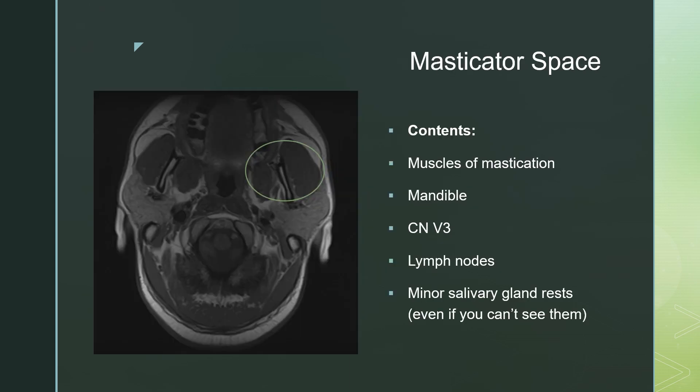In the masticator space, you have the muscles of mastication as well as the mandible to which they attach. You have branches of cranial nerve V3. You have lymph nodes and you have minor salivary gland rests. So if you have a mass in the masticator space, think about a mass involving the muscles like a rhabdomyosarcoma. You can think of a mass involving the mandible such as an osteosarcoma, or even if it's not a mass, it could be something infectious related to the mandible.